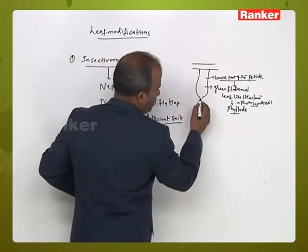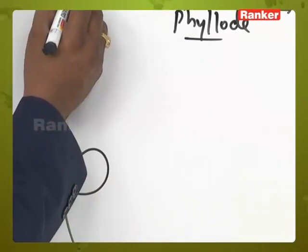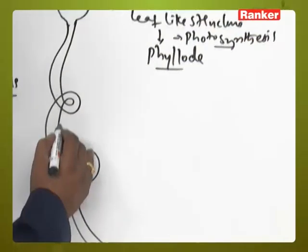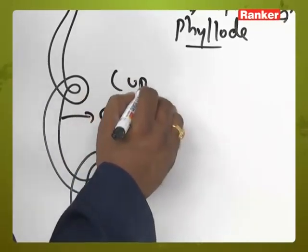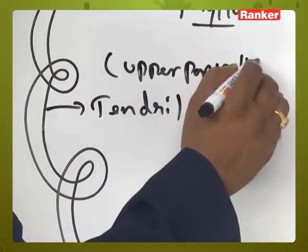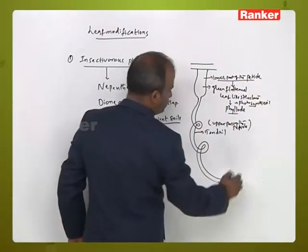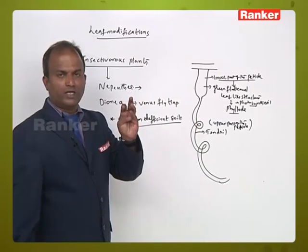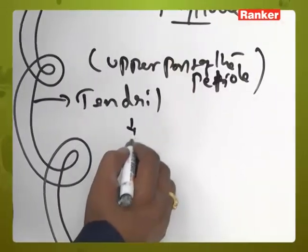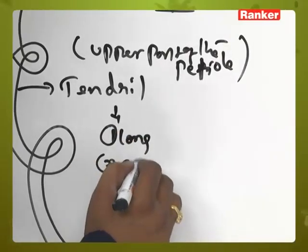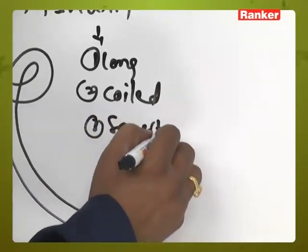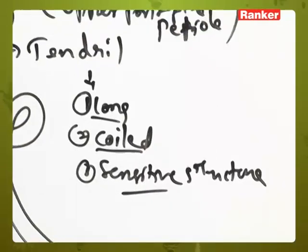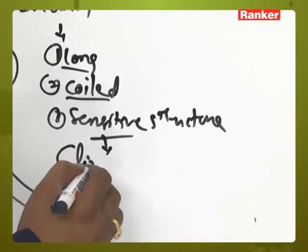The upper part of the petiole is modified into a tendril. Tendril is a long, coiled, sensitive structure which helps in climbing.